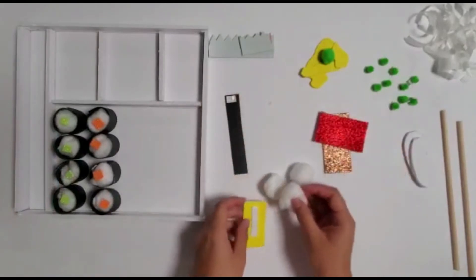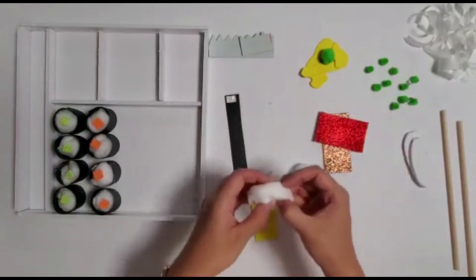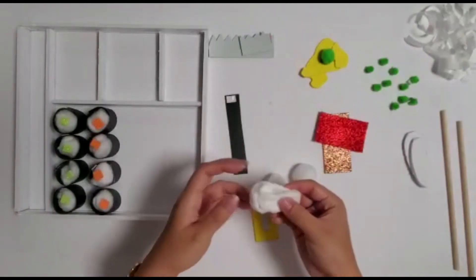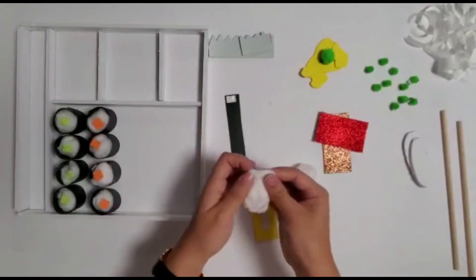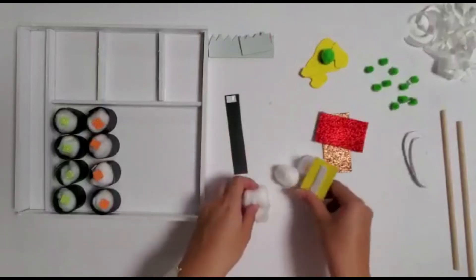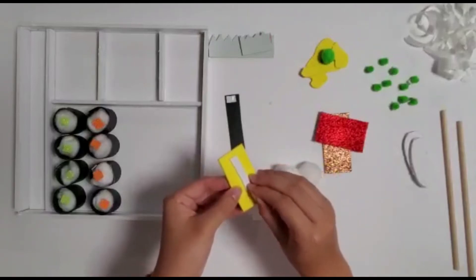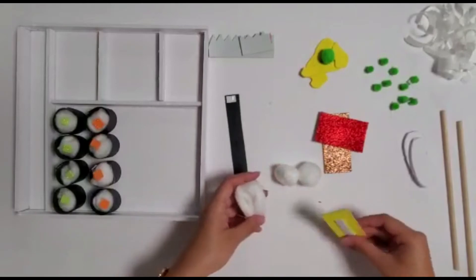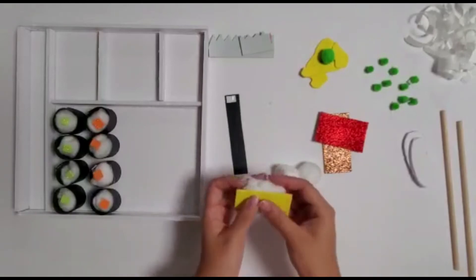Next, let's make a tamago sushi, or egg sushi. Take a cotton ball and pull and flatten it into more of a cylinder shape. Take the yellow rectangle of foam, peel off the tape, and stick it onto the flattened cotton ball.